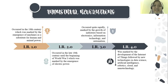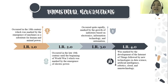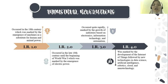The last revolution, the Industrial Revolution 4.0, was marked by the development of the Internet of Things (IoT), followed by new technologies in data science, artificial intelligence, robotics, cloud computing, and nanotechnology. However, we will not discuss this history of the Industrial Revolution in detail — I want you to know this information at a glance, and it will be continued in the next discussion.